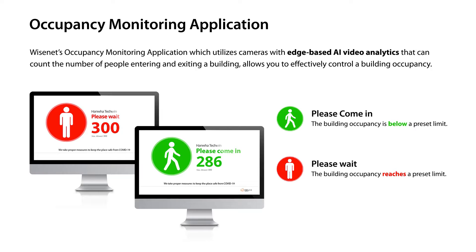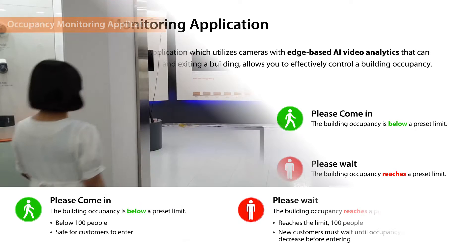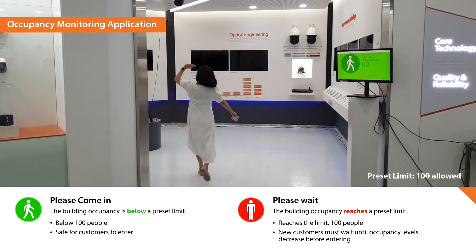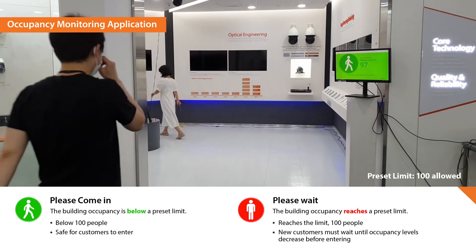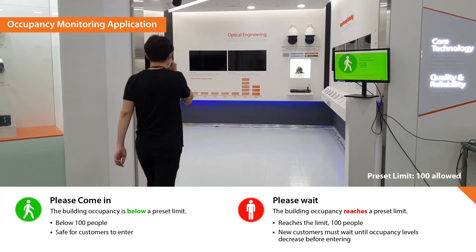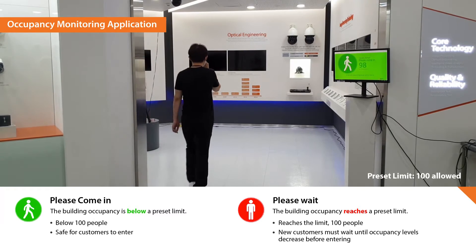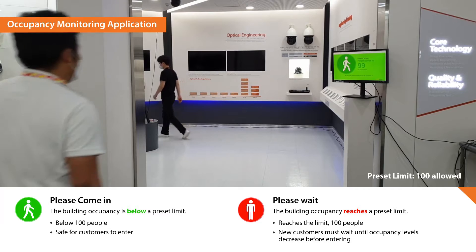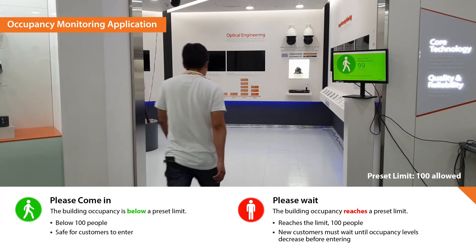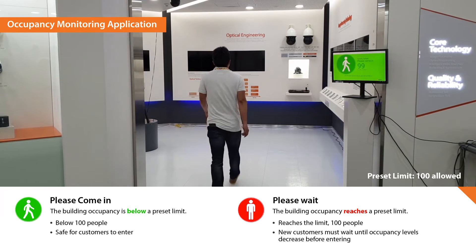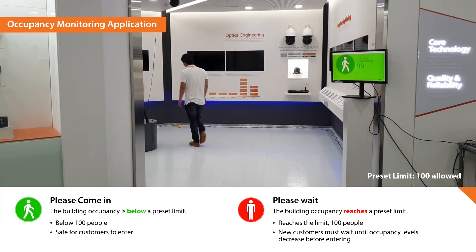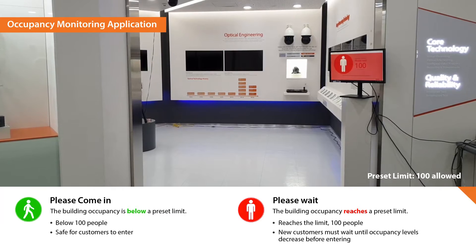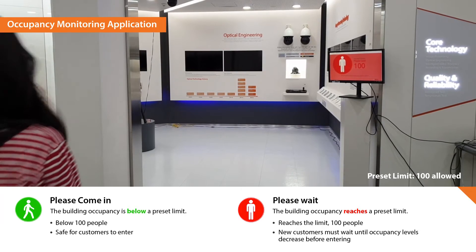The application will show you whether it's safe to come in or if you have to wait for someone to leave. Here you can see the monitor is placed by the entrance, indicating how many people have entered and if it's okay to enter. Once the occupancy level has been reached, it will turn red to indicate that someone should wait before entering.